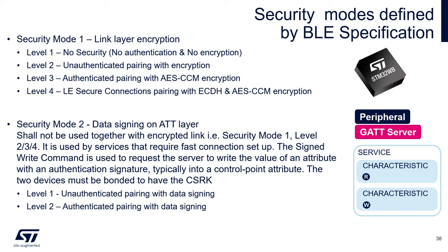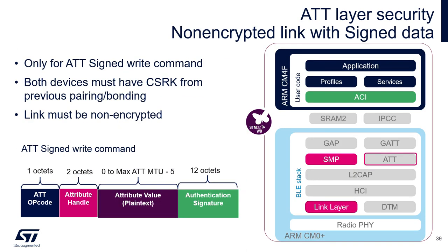For data signing to take place, both devices must have the CSRK (Connection Signature Resolving Key), which is one of the keys distributed during pairing. So the two devices must be paired, but the link may not be encrypted. Attribute signing is only used by the signed write command issued by the GATT client, and the attribute value is appended by a 12-byte authentication signature.